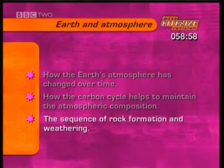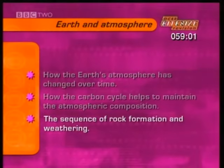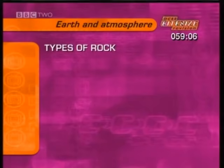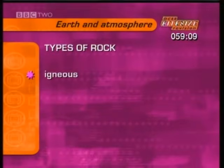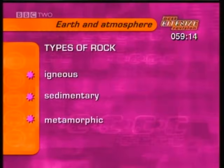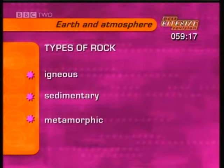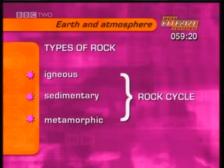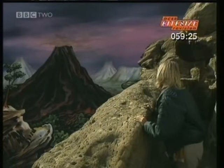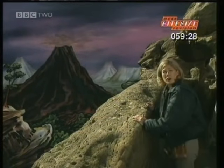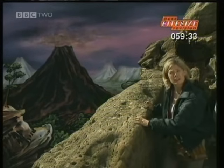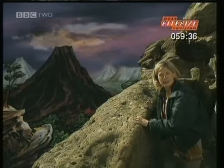The next part looks at the sequence of rock formation and weathering that makes up the Earth. There are three types of rock you need to know about: igneous, sedimentary and metamorphic. These rocks are linked to each other by the rock cycle. When a volcano erupts, it's the beginning of one part of something known as the rock cycle.